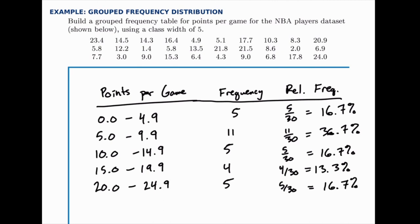So it's really just counting. The only thing to keep track of for grouped frequency tables is to make sure your classes are all evenly wide and that none of them overlap. That's the important piece.